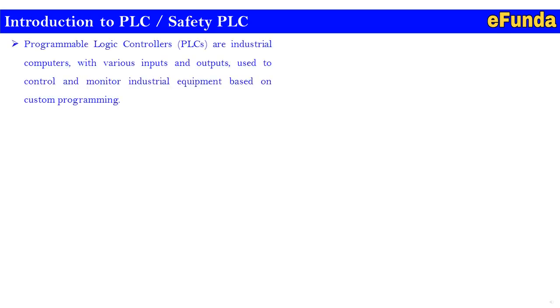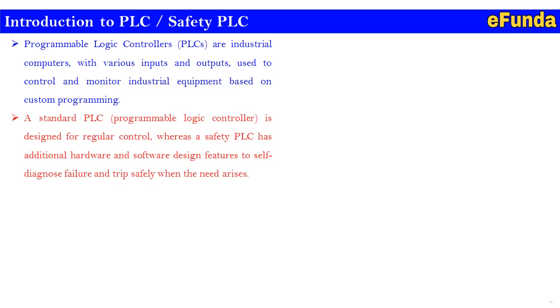Introduction to PLC and Safety PLC. Programmable Logic Controllers (PLCs) are industrial computers with various inputs and outputs used to control and monitor industrial equipment based on custom programming. A standard PLC is designed for regular control, whereas a safety PLC has additional hardware and software design features to self-diagnose failures and trip safely when the need arises.